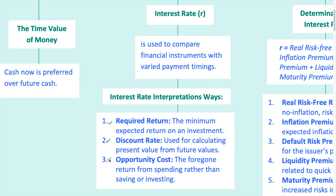Number three is opportunity cost. This is the return you miss out on by choosing to spend money today rather than saving or investing it. For example, if you spend $1,000 today instead of investing it at a 5% return, you miss out on earnings.